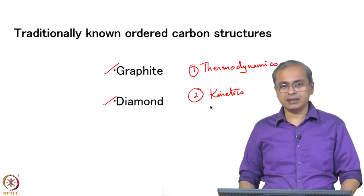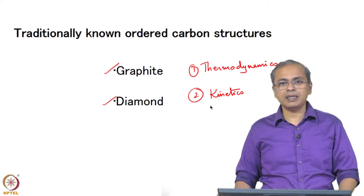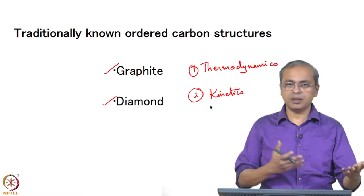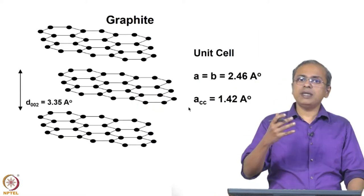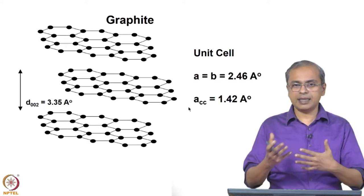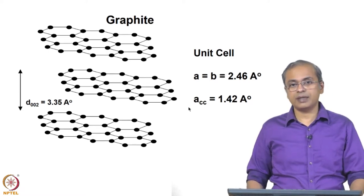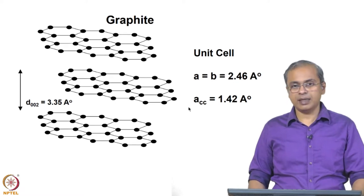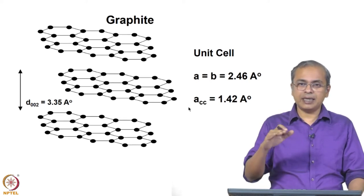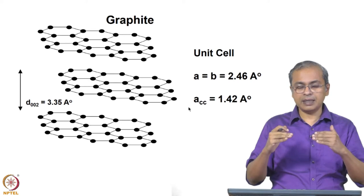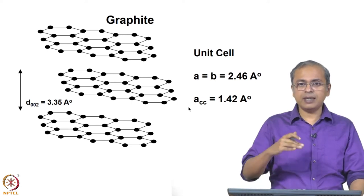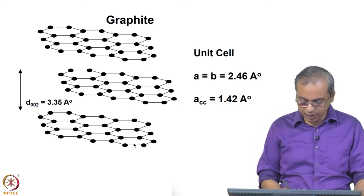Diamond was created under certain conditions and then brought to room temperature and atmospheric pressure, where it appears stable indefinitely. This is true in chemistry, metallurgy, and chemical engineering — it has to do with the competition between thermodynamics and kinetics. Now let us look at the structure of these materials. Graphite has a layered structure; you have different layers, each layer consisting of hexagonally bonded carbon atoms.